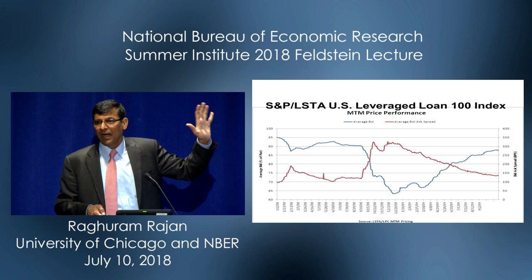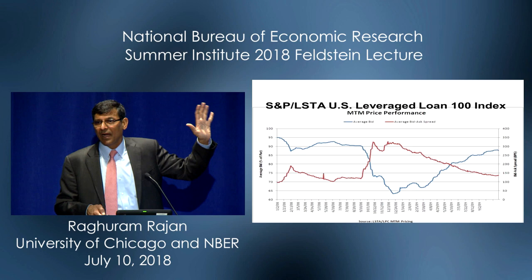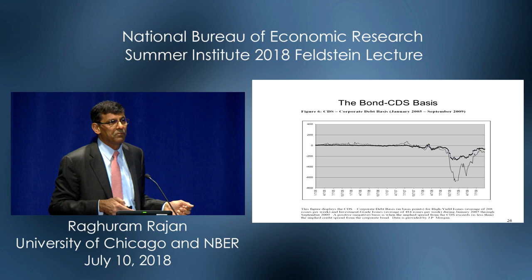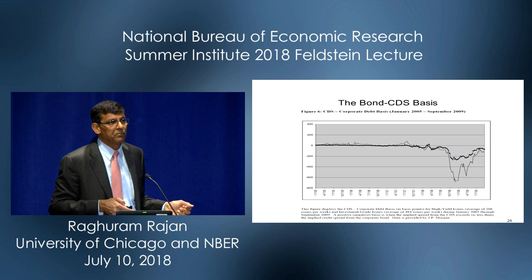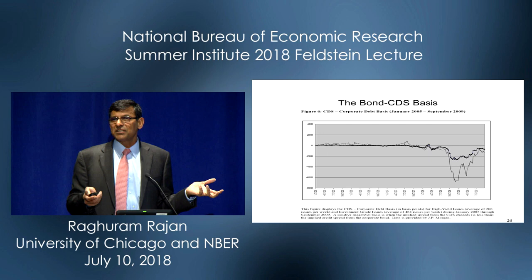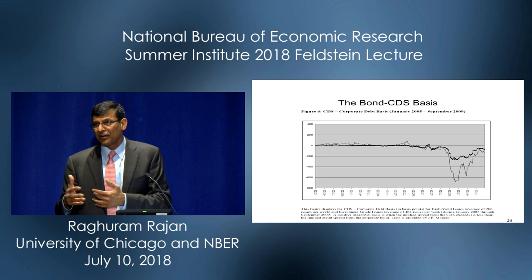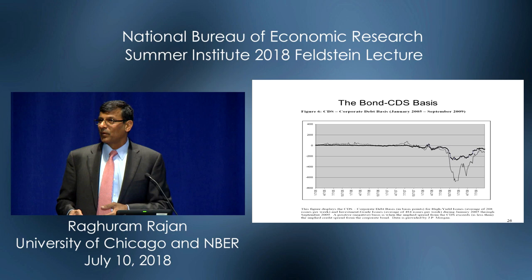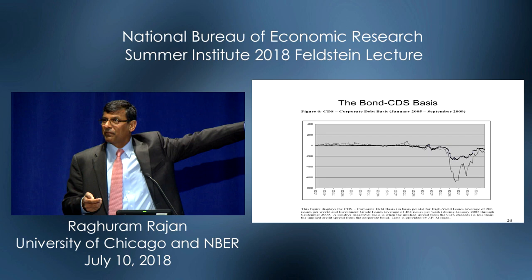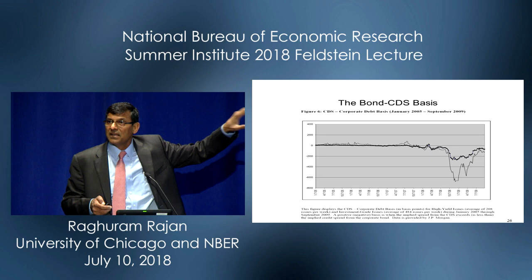What happened? How did it get rescued? There were lots of arbitrage opportunities during this period, which some of the people in this room have documented. For example, the bond-CDS basis: you could buy a corporate bond, buy CDS protection on it, and still make an arbitrage spread — money in the bank, provided the CDS seller honors it when the bond fails. That became a big concern during the crisis. And the covered interest parity also broke down during this time.